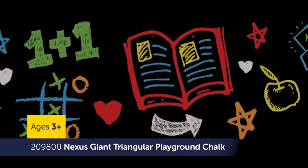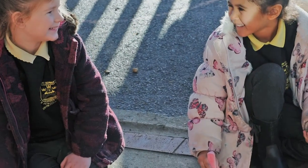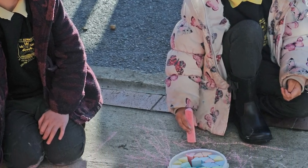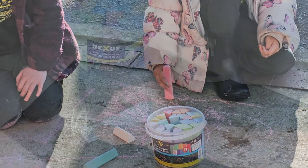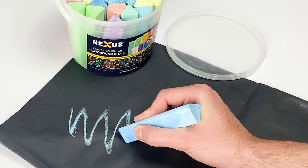What's beautiful about these big chalks is they can be used on any blackboard or sugar paper surface. Really nice to get children active together, playing together outside, and it's great to reinforce that triangular grip.